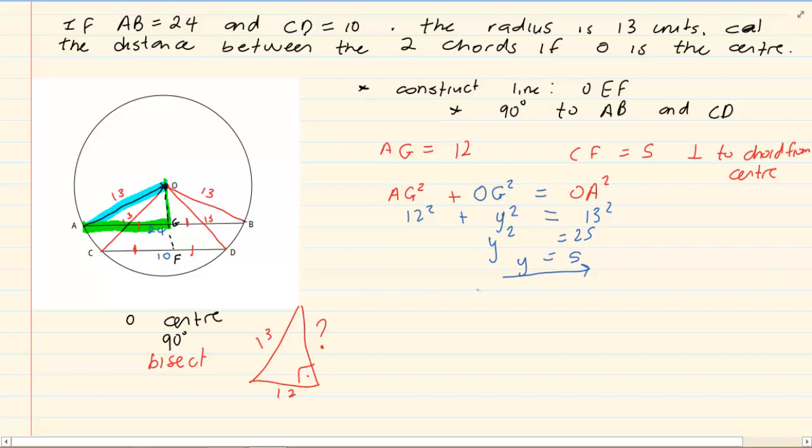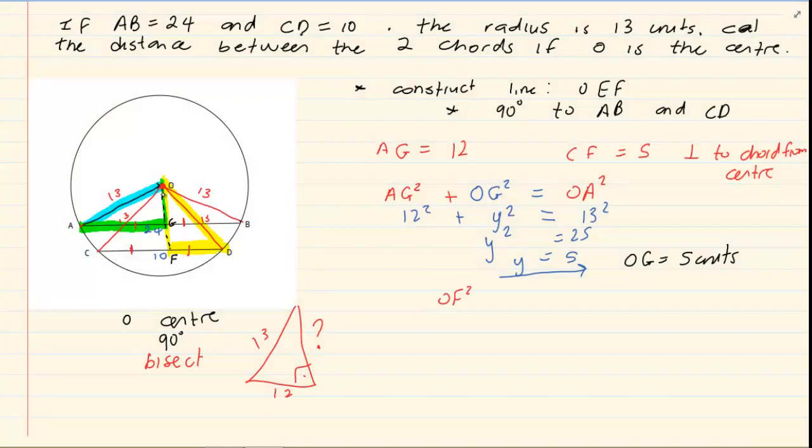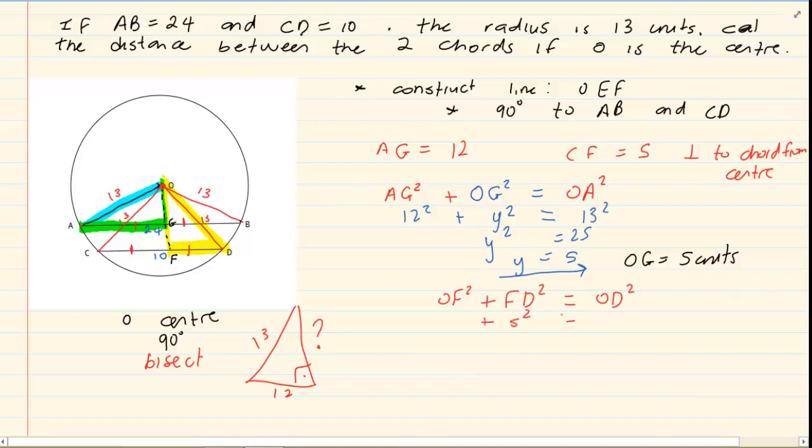Now, let's use the other triangle. Let us use O, F, O, D, and D, F. Okay, so we have OF squared plus FD squared is equal to OD squared. Now, we don't have OF, but we have FD, it's 5. And we have OD, which is 13. So, using our Pythagoras, we have that OF squared is 144. OF would equal to 12.